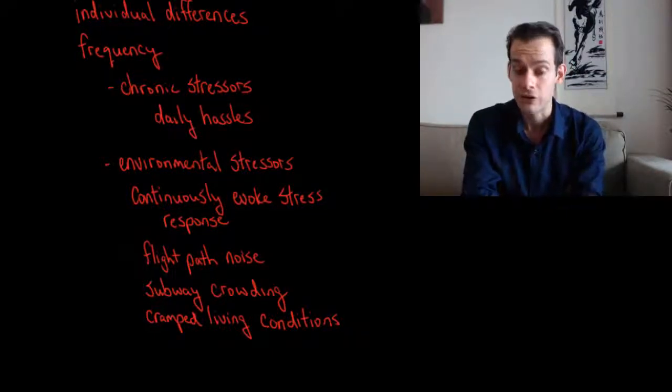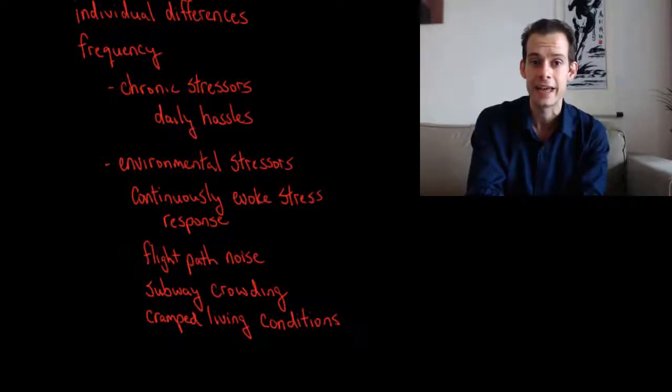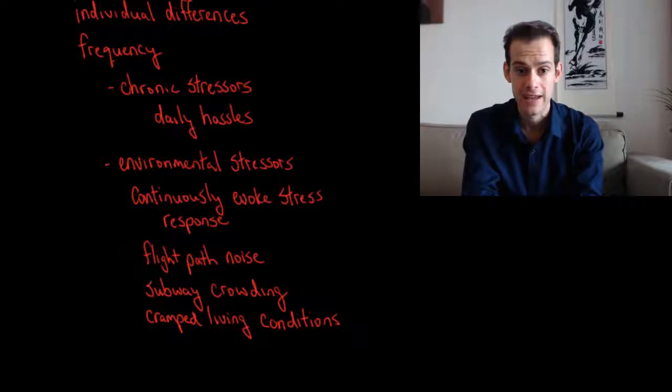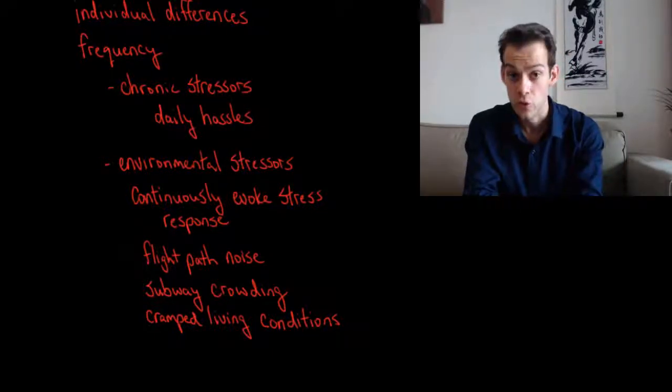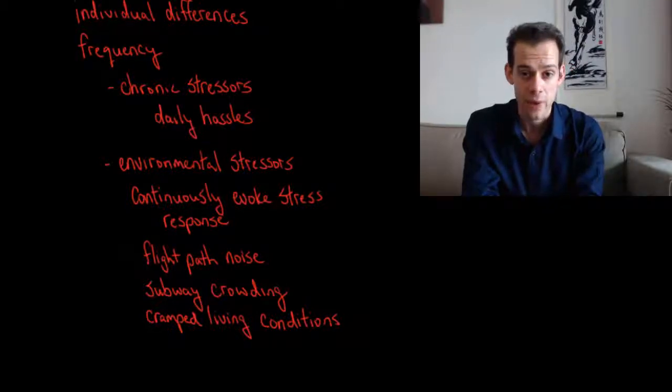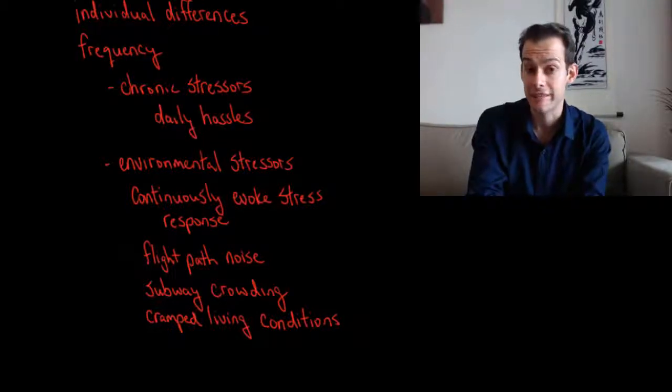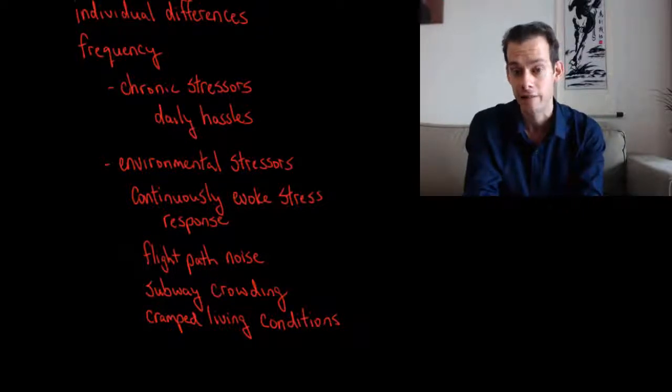We can also think about environmental stressors. These are often chronic stressors and these are things in the environment that cause a stress response. And they often evoke the stress response continually. So things like living on flight path noise or schools that are located on flight path noise. Or think about crowding on the subway or living in cramped living conditions. These are things that are environmental stressors and they are often chronic stressors because we have to deal with them on a very regular basis.